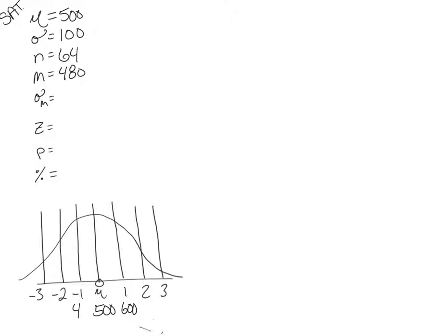We are looking at what's the probability that this group of 64 students will have an average sample mean greater than 480. So 480 would be right about at the mean, but it's not quite, so right about there. We're looking at what's the probability that this group will have a sample mean greater than 480.